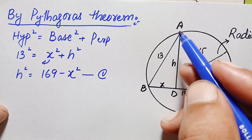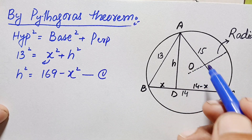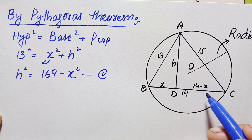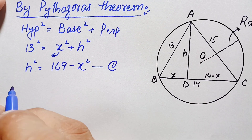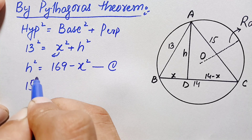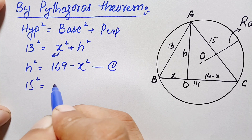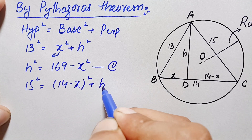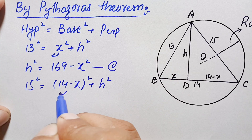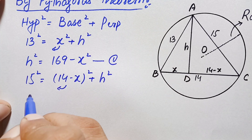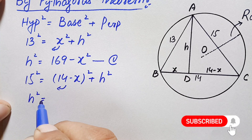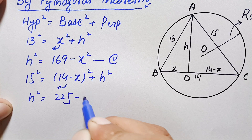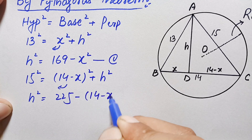Now moving to the right angle triangle number two, triangle ADC. Here the hypotenuse is 15 units, height is h, and base is 14 minus x. Using the Pythagorean theorem: 15² = (14 − x)² + h². Taking the expression to the left hand side, h² = 225 − (14 − x)². Let us call this equation number two.